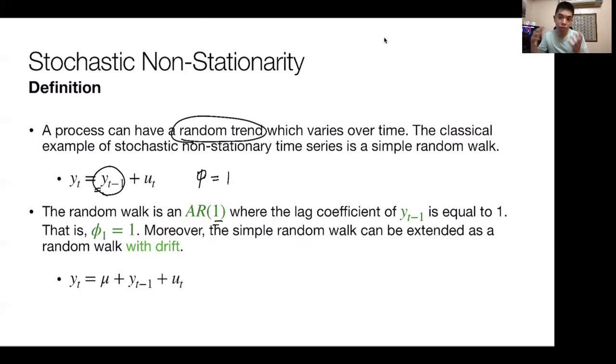The random walk is in essence an AR model, wherein the coefficient of the lag term, because we just used one lag, is equal to 1. Moreover, we can modify this model into a simple random walk with a drift parameter, which is we add this mu term here.